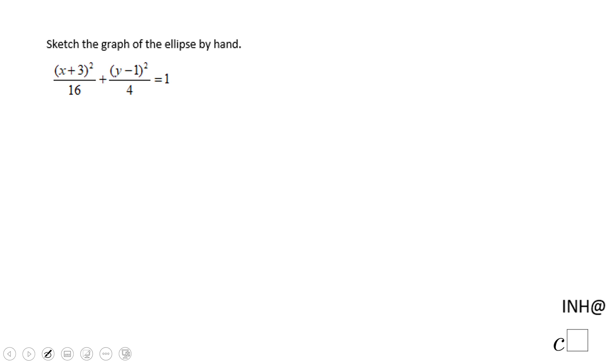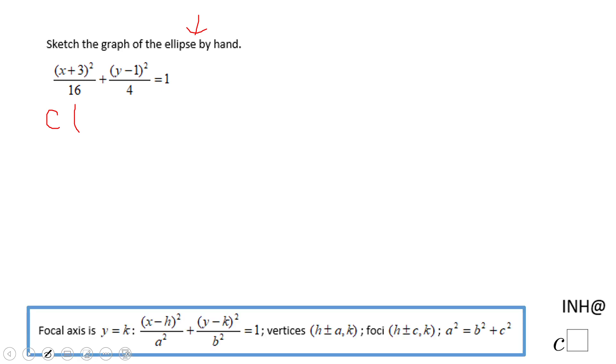Welcome or welcome back to I Need Help at C-Square. In this example we have an ellipse and we have to sketch the graph by hand. The first thing you want to notice is the center. The center will be, look here, x minus h, so it's going to be negative 3, and y minus k, that will be 1. This is the center of this ellipse.